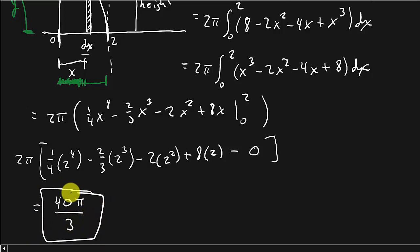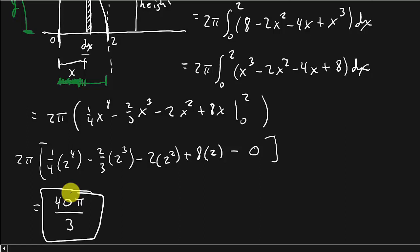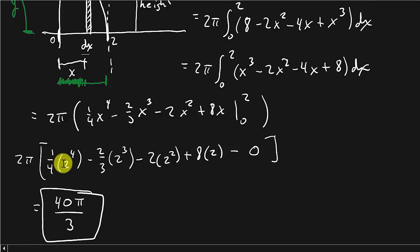The disk method and the shell method are all easy as long as you draw the picture and draw that rectangle in there. I've got some other videos — a lecture video on disk and washer method and the shell method, they're almost an hour long each, and I work a bunch of different examples. Hope the video helped — check out my other videos, give me a like, share, and subscribe. Thanks for watching, see y'all in the next one!